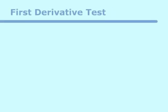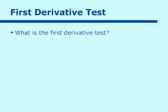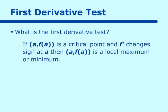The next thing we have to learn about is the first derivative test. What is that first derivative test? The definition states: if (a, f(a)) is a critical point and f prime changes sign at a, then (a, f(a)) is either a local maximum or a local minimum. So the first derivative test involves finding a critical point and then testing whether it changes sign or not.